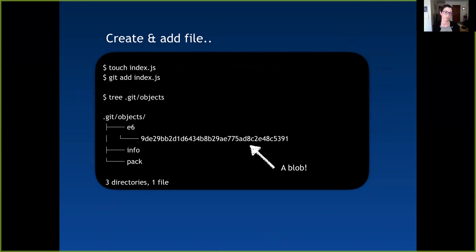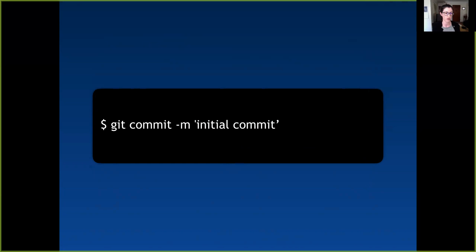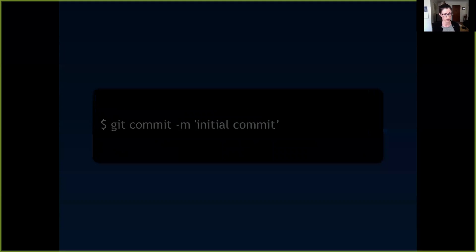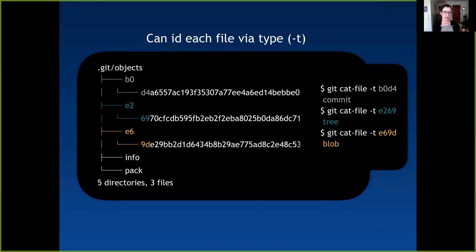After making changes to that file and running git commit, you can see a snapshot of that same folder showing all three objects we discussed initially. The blob is at the bottom, above it is the tree, and then the commit. They're not always necessarily in that order — I think it depends on how the hashes are ordered — but all three objects are always going to be in there when you run those commands.